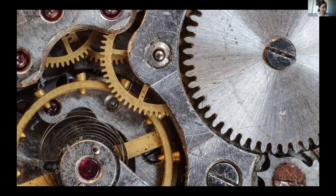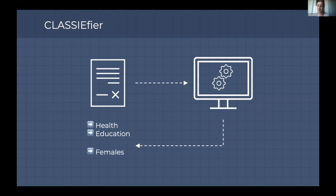In the SmartyGrants world, one area we're automating quite heavily is grants classification. We've built a tool that can read a grant application and tell you whether it's related to a particular subject — arts, education, or health — and also what beneficiary group that grant application serves: whether it's targeted towards supporting women, First Nations Australians, people with disability, and so on.